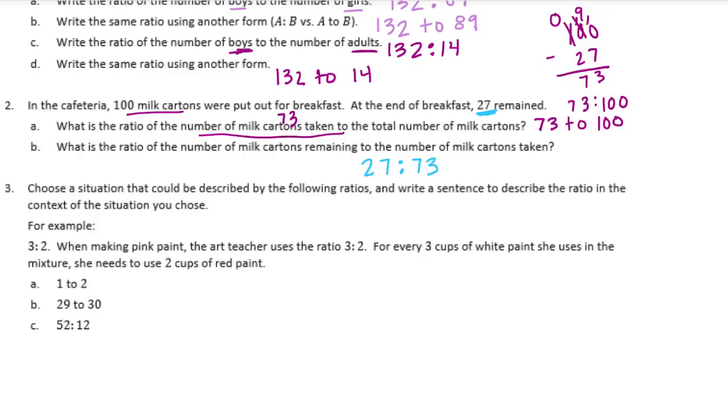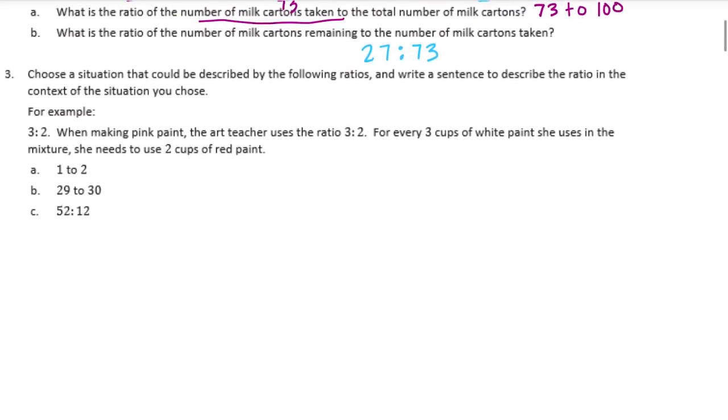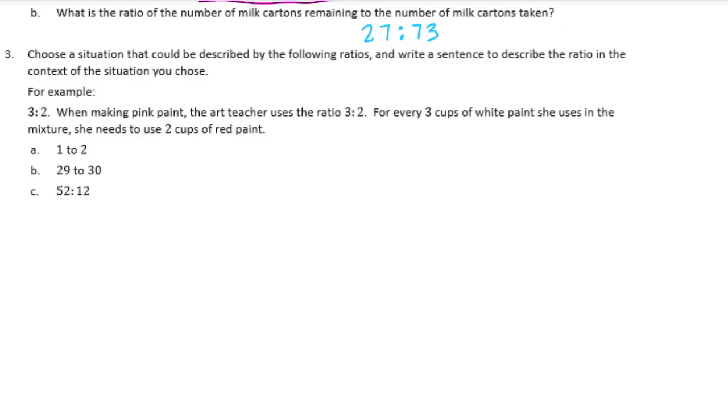Number three: choose a situation that could be described by the following ratios and write a sentence to describe the ratio in context of the situation you chose. For example, 3 to 2. When making pink paint, the art teacher uses three to two. For every three cups of white paint she uses in the mixture, she needs to use two cups of red paint.